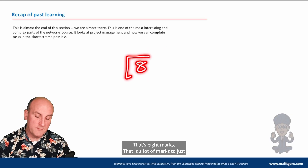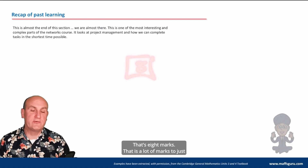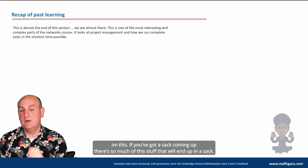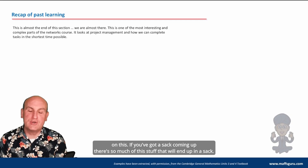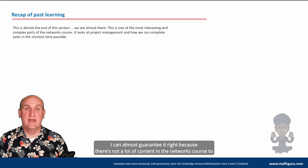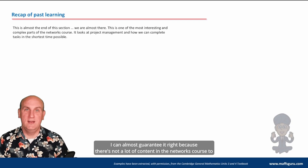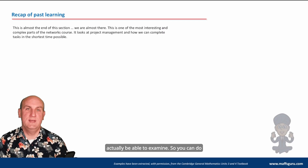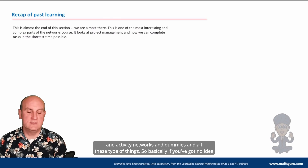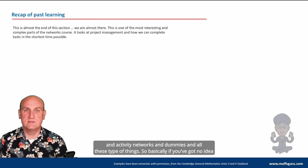My advice is to focus on this. If you've got a SAC coming up, so much of this stuff will end up in a SAC — I can almost guarantee it — because there's not a lot of content in the networks course to examine. You can get Dijkstra's algorithm, the Hungarian algorithm, crashing, activity networks, dummies, and all these types of things.